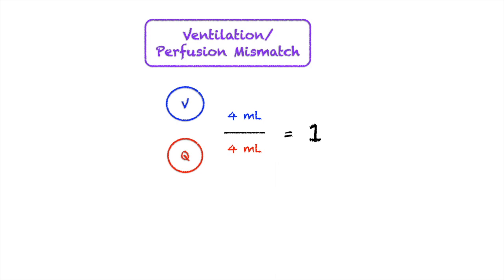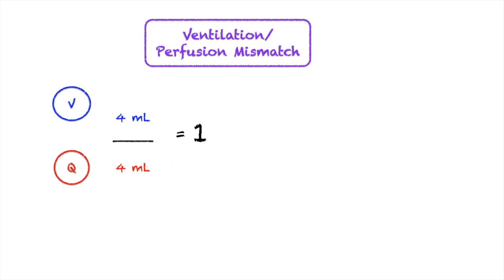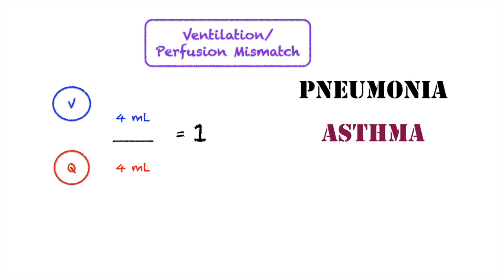A VQ ratio of 1 is our magic number. If we have a result other than 1, then we have a ventilation-perfusion mismatch. Numerous conditions can cause a VQ mismatch, such as pneumonia, asthma, COPD, and pain.